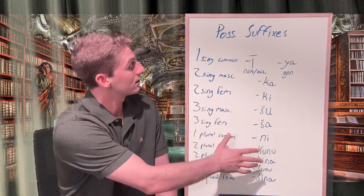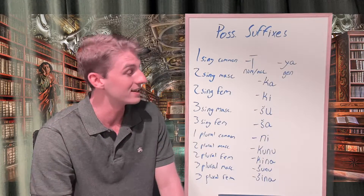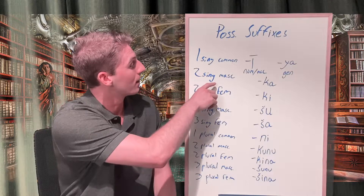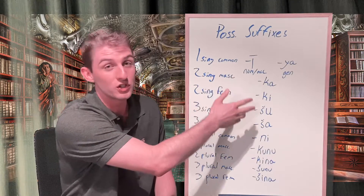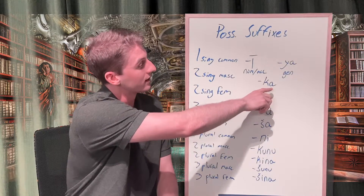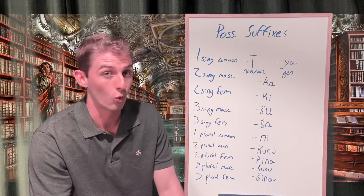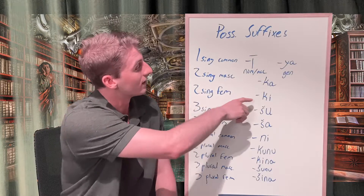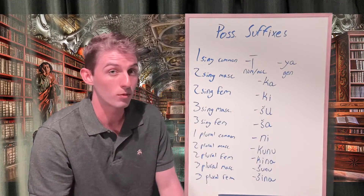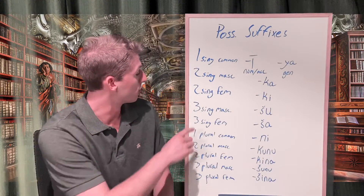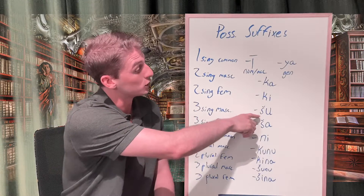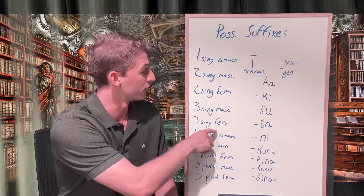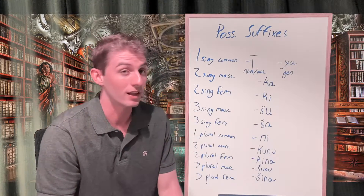For the rest of the possessive suffixes, we see the same form across all three cases. For the second person singular masculine, we find 'ka,' meaning 'your' with a masculine noun. For the second person singular feminine, we find 'ki,' again 'your' but for a feminine noun. For the third person singular masculine, we find 'šu,' meaning 'his.' For the third person singular feminine, we find 'ša,' meaning 'her.'